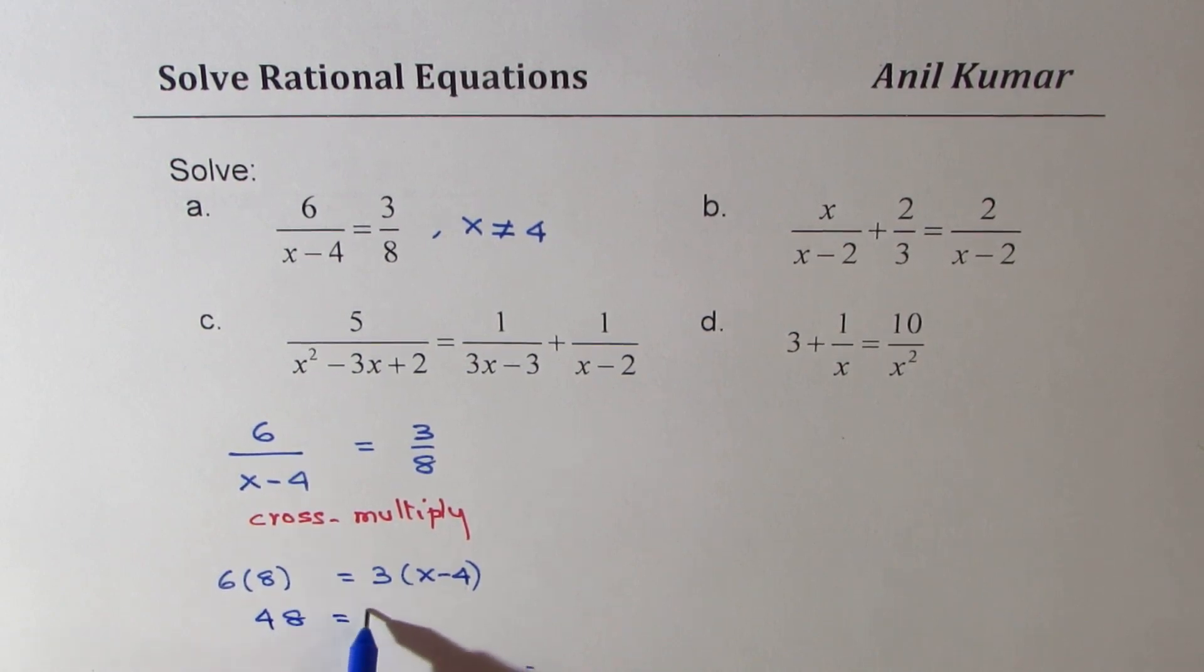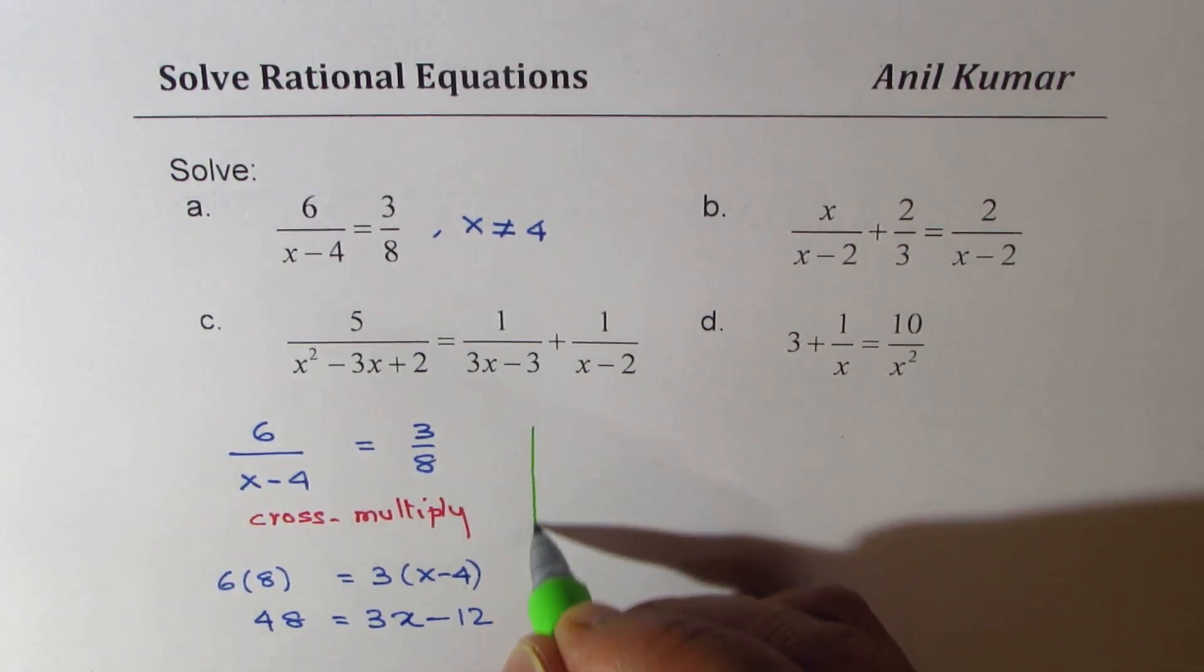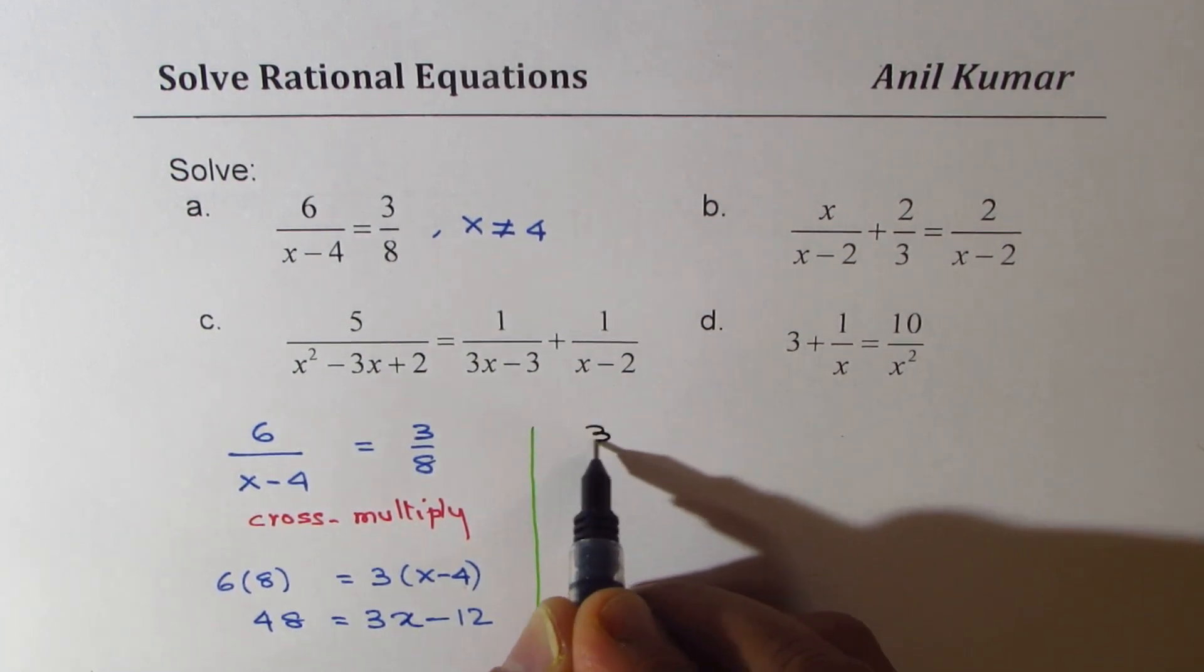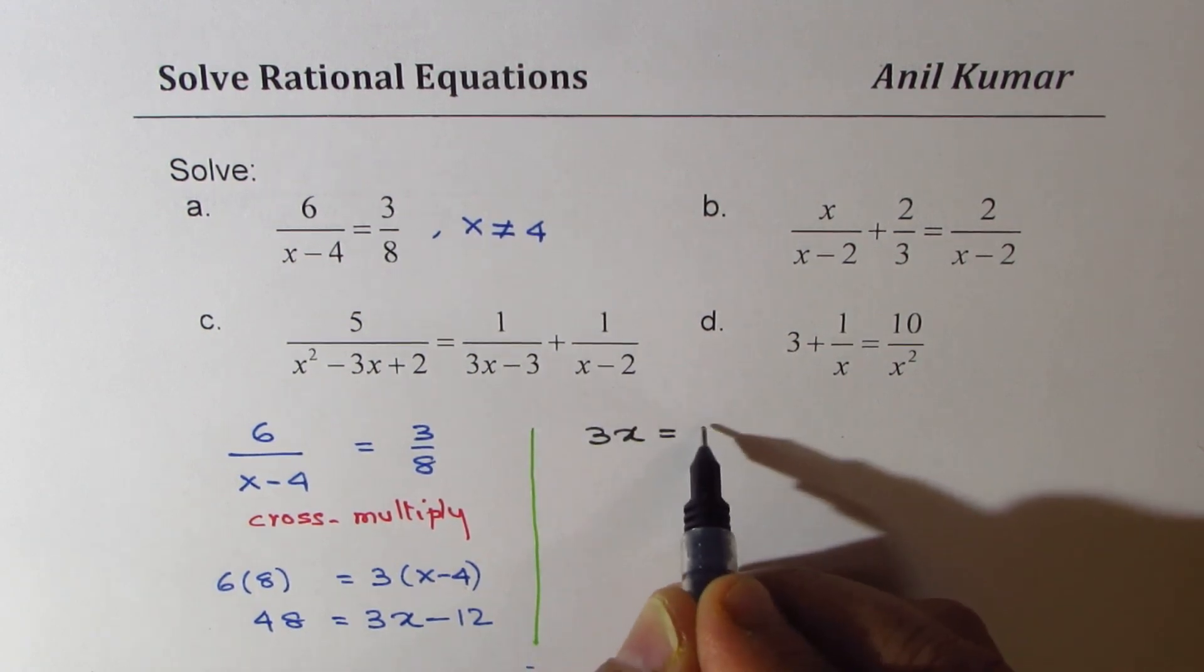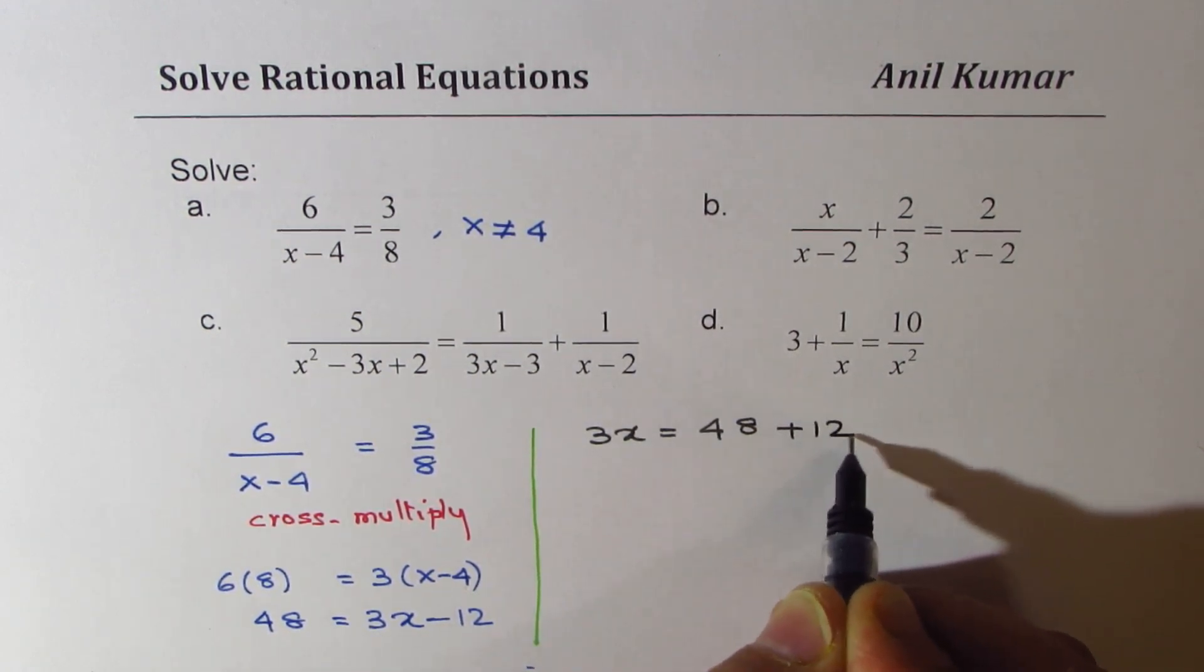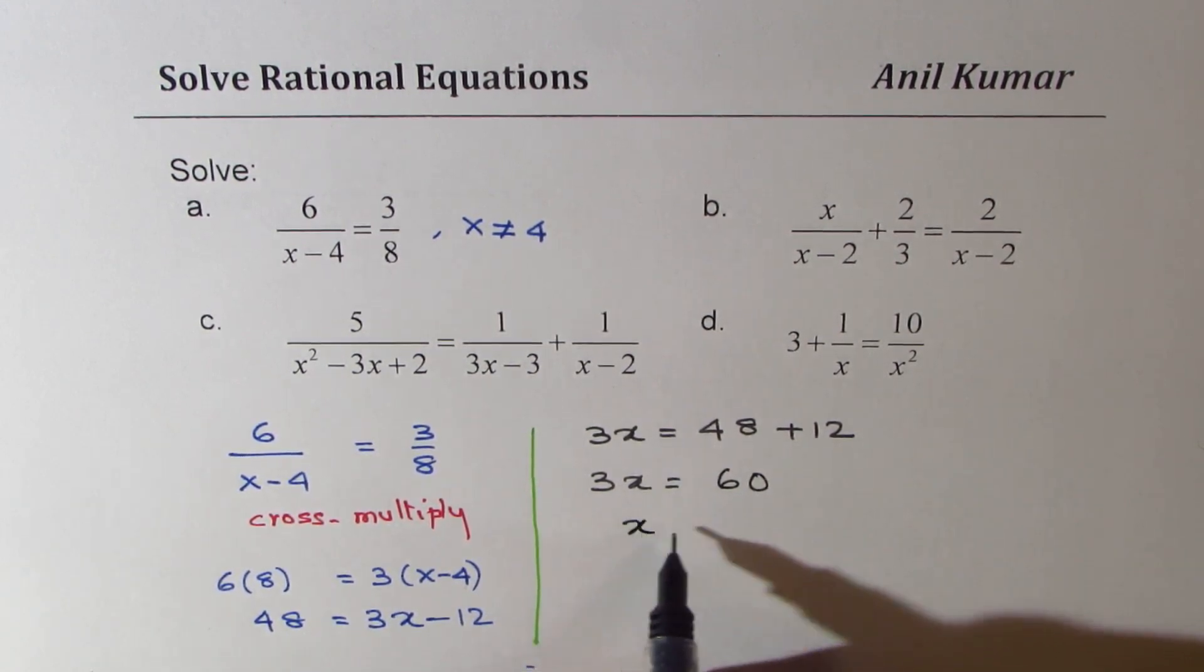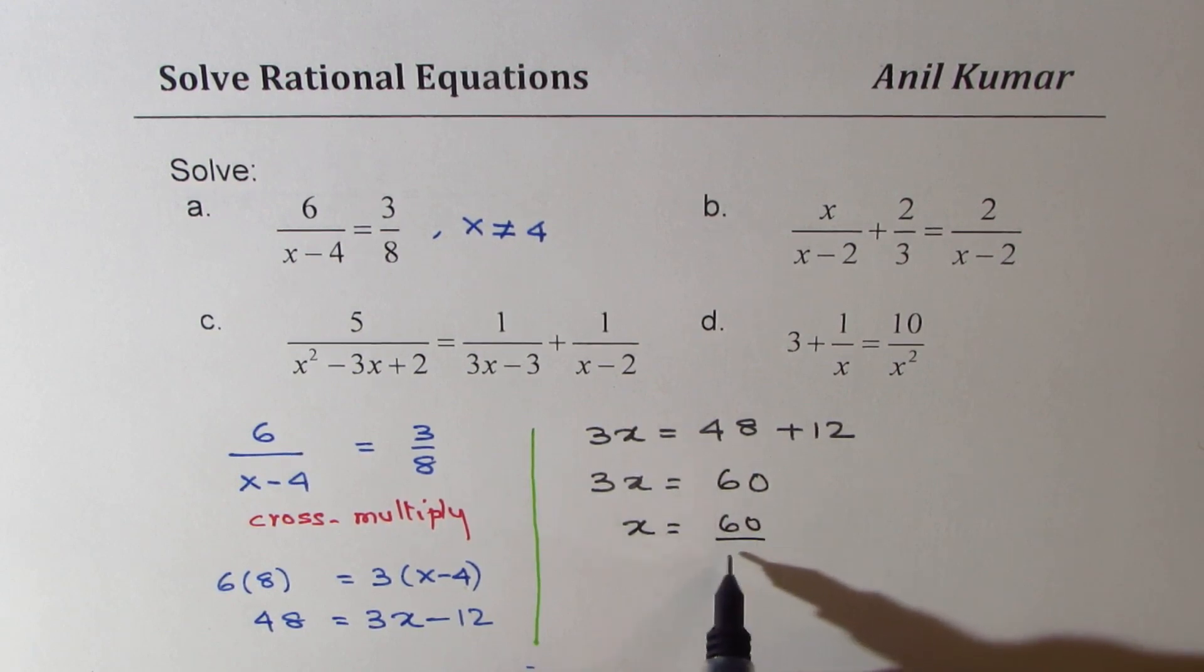48 equals to... you could divide by 3 actually and simplify it further, but let me this time just multiply. We are working with bigger numbers than required. So we need to find what x is. We will isolate x. We have 3x equals to 48 plus 12. That gives you 3x equals to 60 or x equal to 60 over 3, which is x equals to 20.